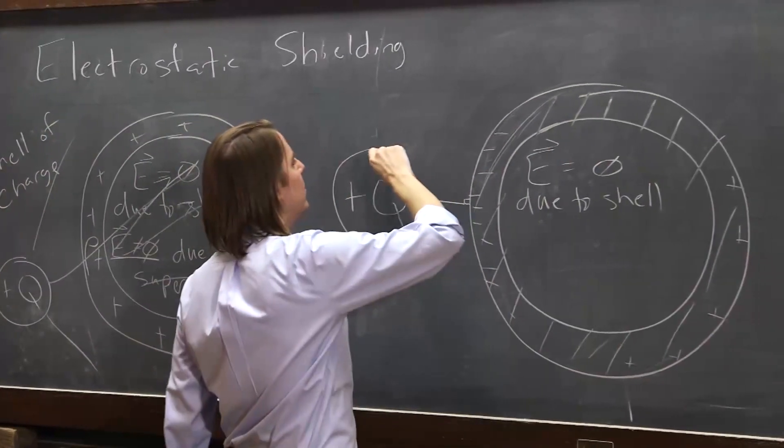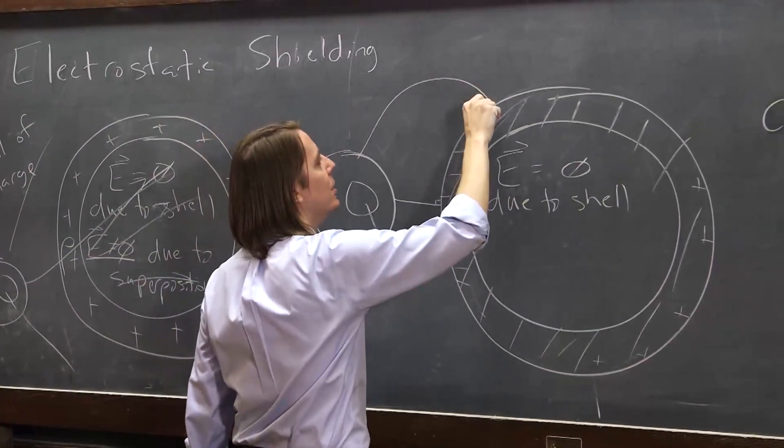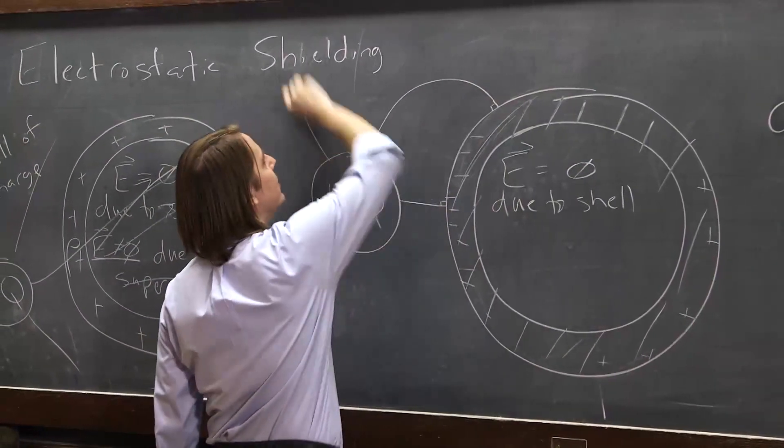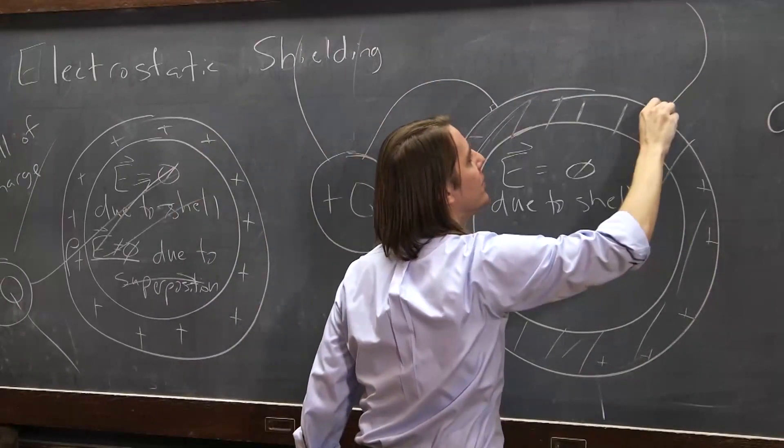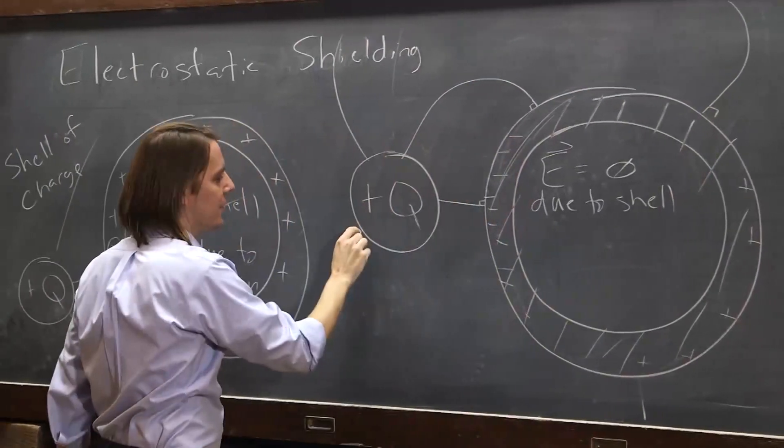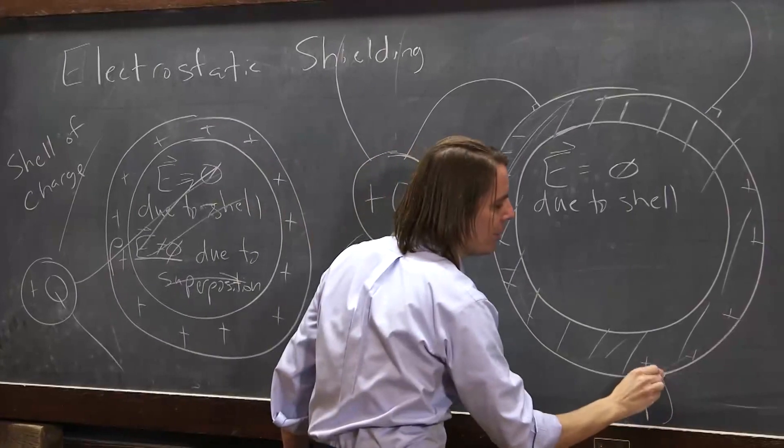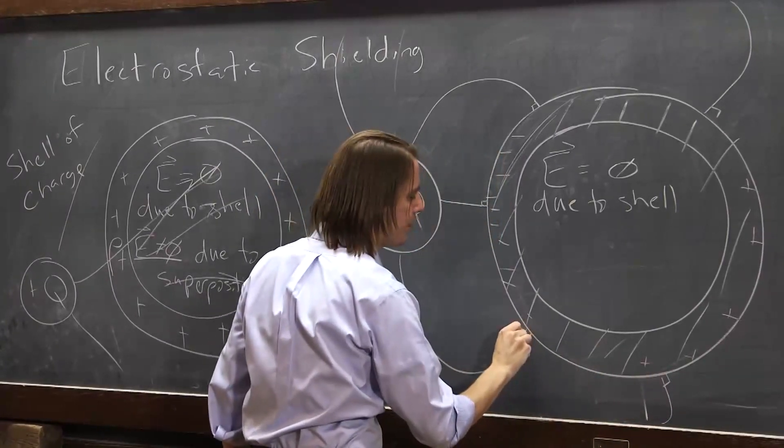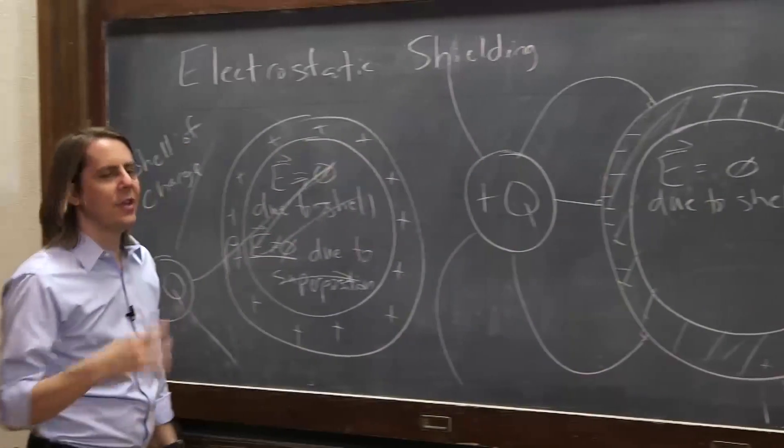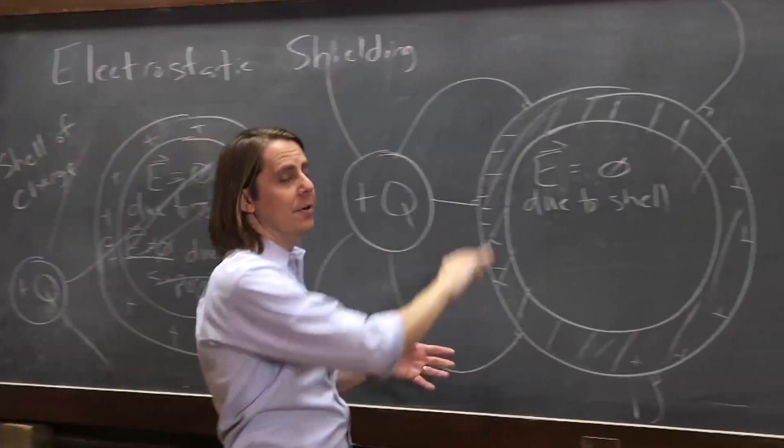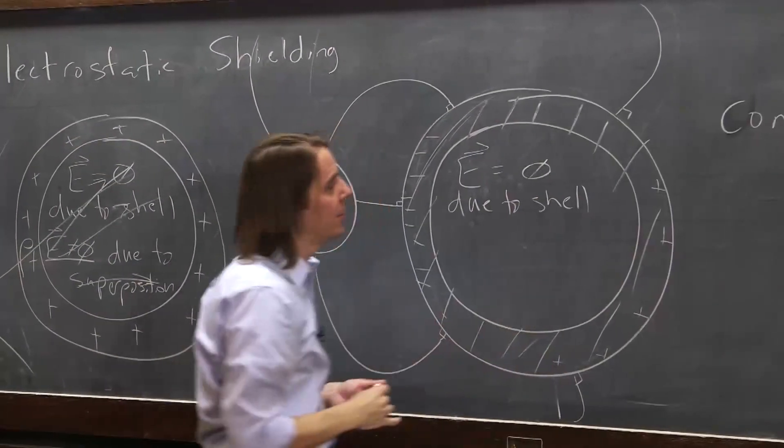So this metal shell is going to throw up a charge distribution to terminate all of the field lines right on its surface. Just like this. That one will come out and probably go right there. One might come out and do like this.